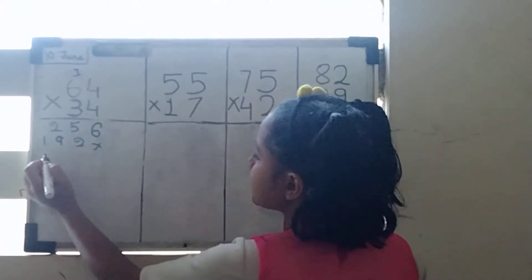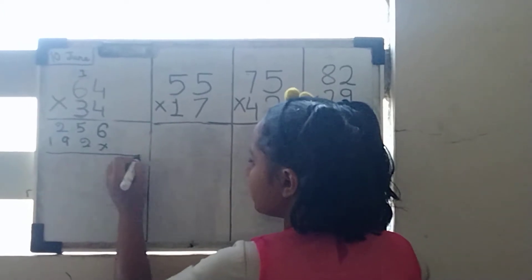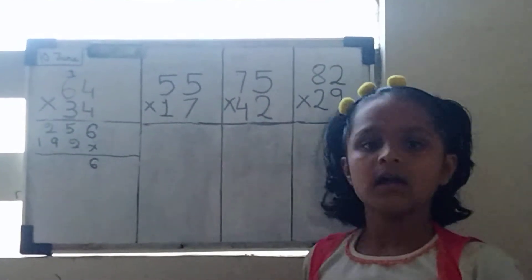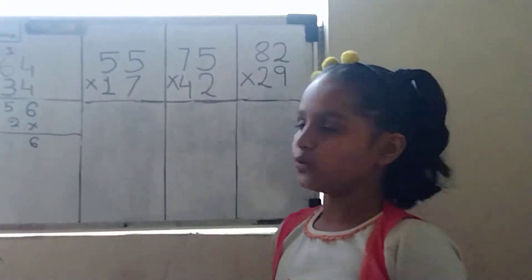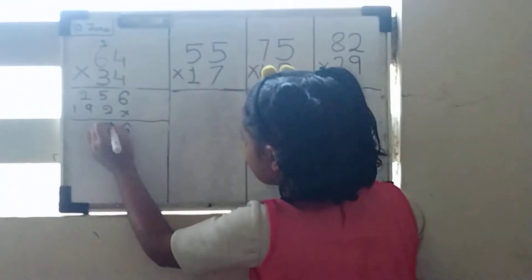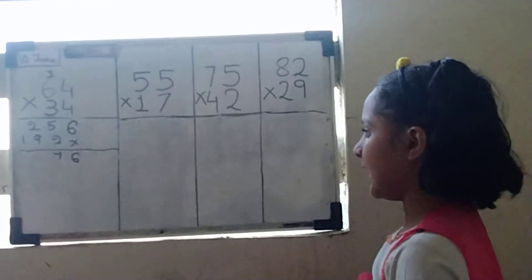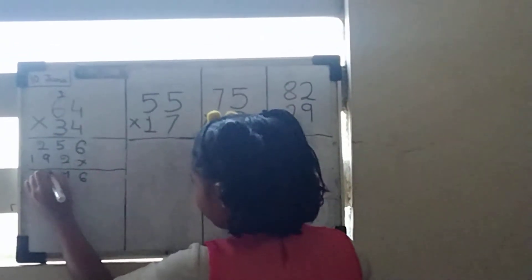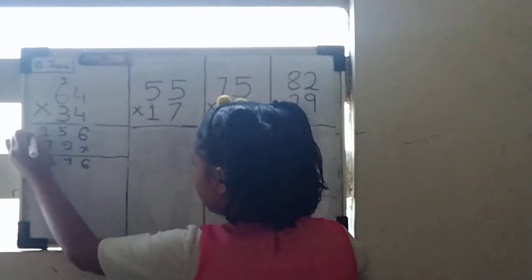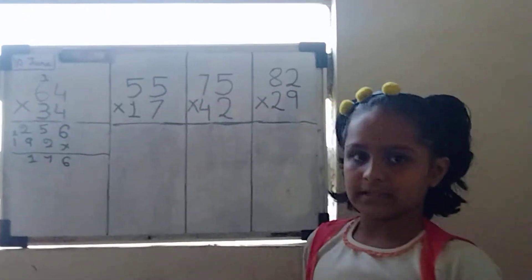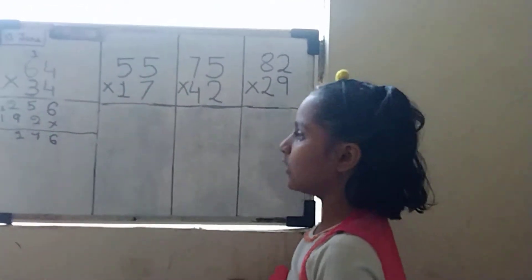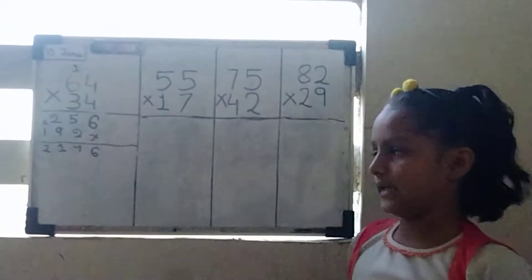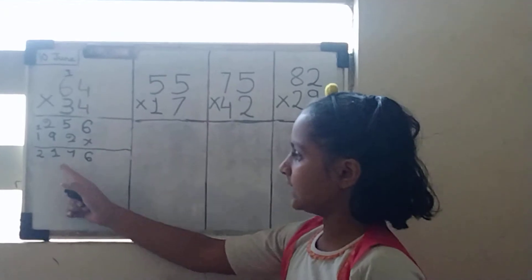Then we will do plus. 6 will be here and 5 plus 2 equals to 7. And 9 plus 2 equals to 11. Then we will write 7, then we will write 1 here and 1 will be carried over. Then 1 plus 1 equals to 2. Then our answer is 2, 1, 7, 6.